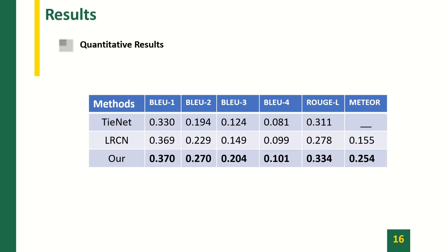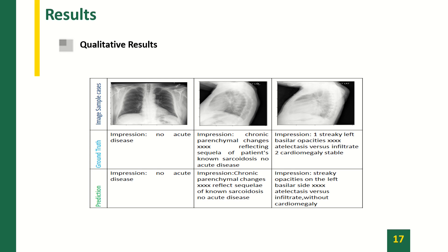In the table below, we compared our method with two previous methods on the same dataset. Our model demonstrates improved performance with higher BLEU, ROUGE-L, and METEOR scores, as shown by the quantitative results. Our model also demonstrates strong qualitative performance in generating accurate and detailed descriptions for medical images. As you can see in the figure, the generated descriptions closely align with the expert annotations, highlighting the potential of our approach for improving medical image captioning.